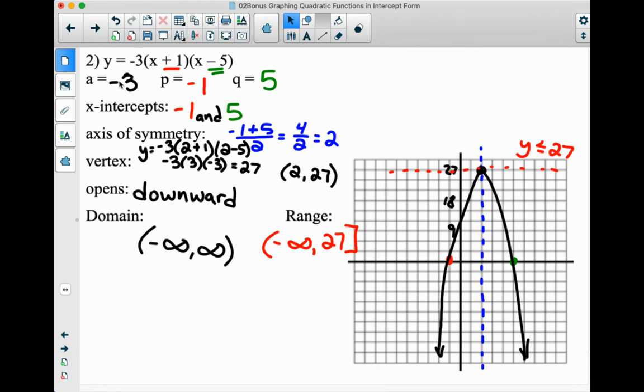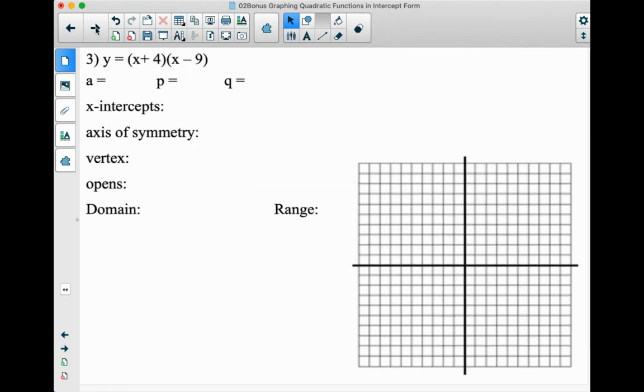Let's try to get another one done. All right. So A is out in front. That's a 1, right? There's nothing there, which means it opens upward. Let's see, P is negative 4, right? Because it says plus 4. Q will be positive 9.